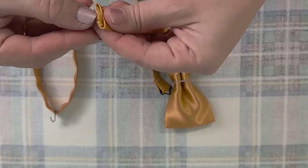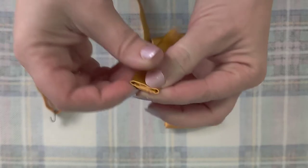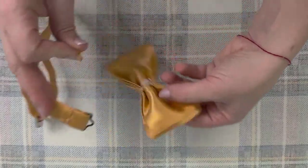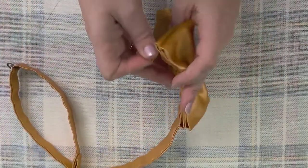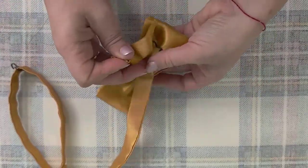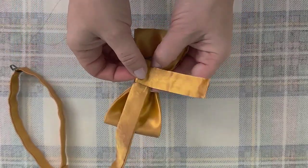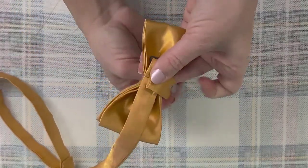Now we have to sew them together. Take the smallest piece for the bow and one quarter I pushed it inside so we can have a clean finish. Now place the necktie on the top. First you can pin it to make it easy to hold it, and then with the smallest piece we're going to go around and we'll sew it together.